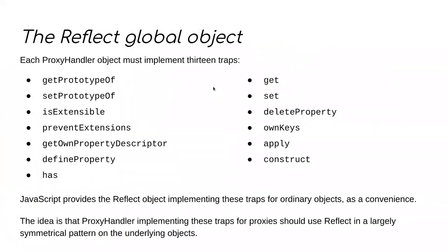There are 13 traps implemented for proxy handlers. There's also a similar global object called Reflect, which does the same thing for ordinary objects — it is intended as a convenience for proxy handlers to use. Basically, for each of these traps, there is a corresponding Reflect method that the proxy handler can use on the shadow target and/or on the underlying original value.